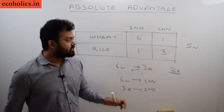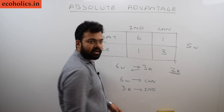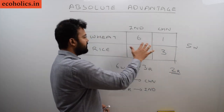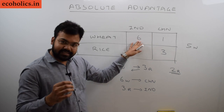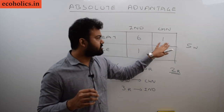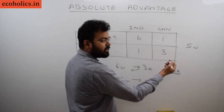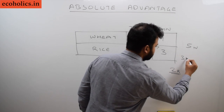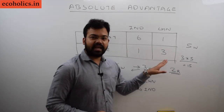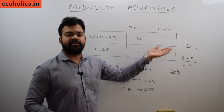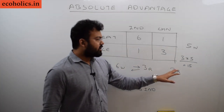Since China is producing three kg of rice per labor hour and is not investing in wheat, it saves five labor hours. If China redirects those five labor hours into rice production, it produces 3 × 5 = 15 kg of rice. After transferring three units of rice to India, China is left with 15 − 3 = 12 kg of rice. This is the best example of gains from international trade based on absolute advantage.